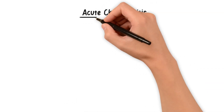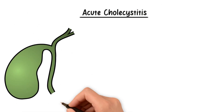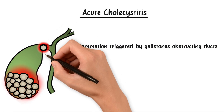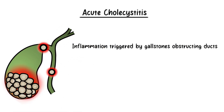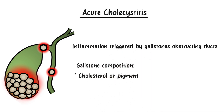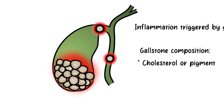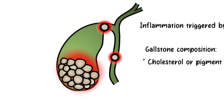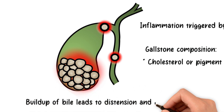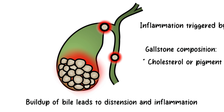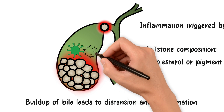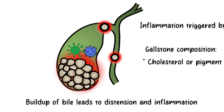Acute cholecystitis occurs when the gallbladder becomes inflamed. This inflammation is often triggered by gallstones obstructing the cystic or common bile ducts. These gallstones, composed of cholesterol or pigment, obstruct the flow of bile, resulting in a buildup of bile within the gallbladder. As bile accumulates and the gallbladder becomes distended, the walls can become irritated and inflamed, and the gallbladder may also become susceptible to bacterial infections.